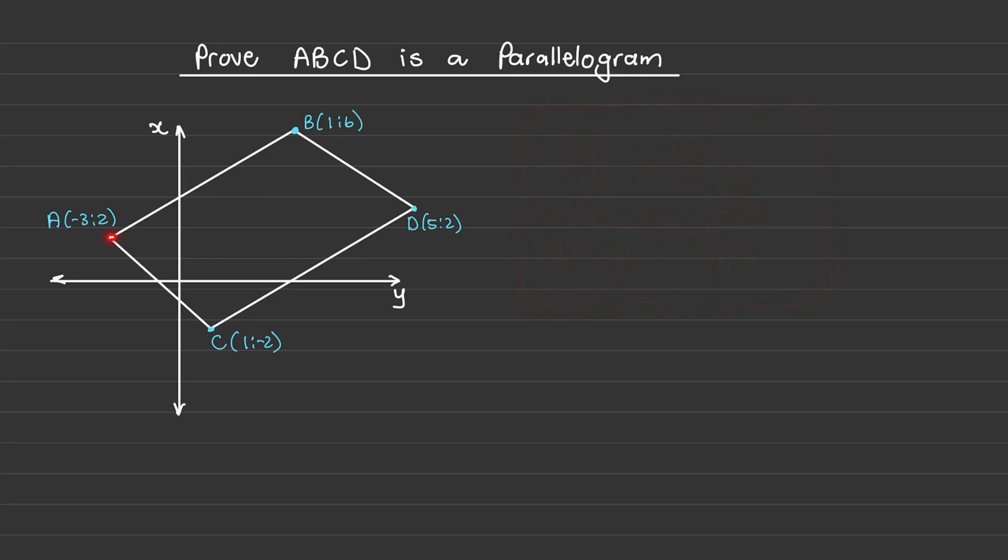So I would prove that the gradient of line AB is equal to the gradient of line CD. And then I'll find the gradient of BD and prove that it's equal to the gradient of line AC. And when the opposite sides have the same gradients, then this diagram would be a parallelogram.